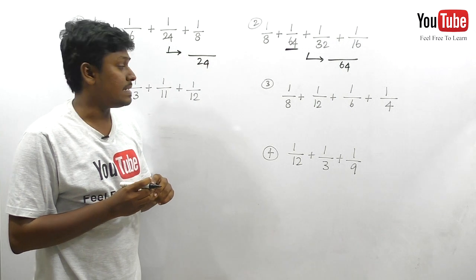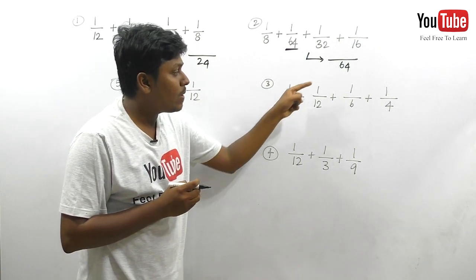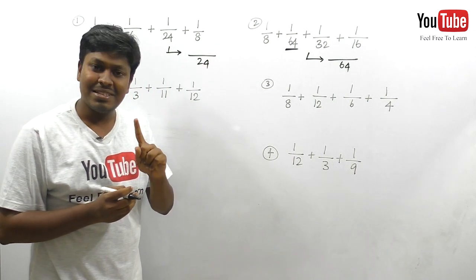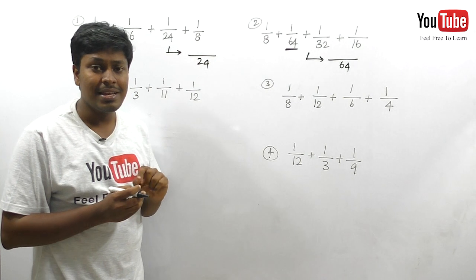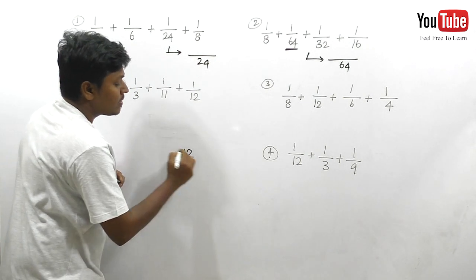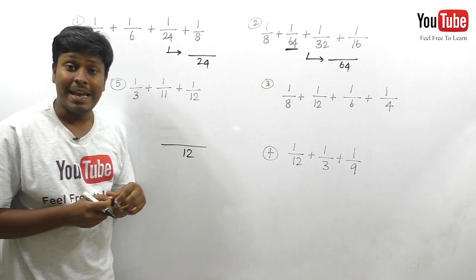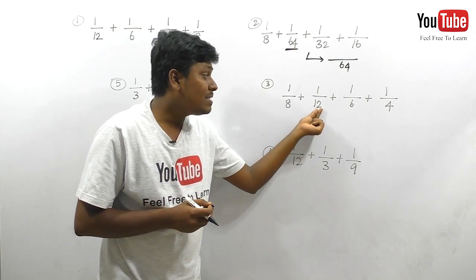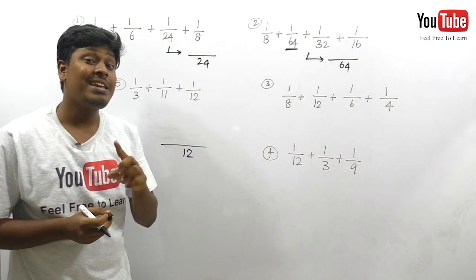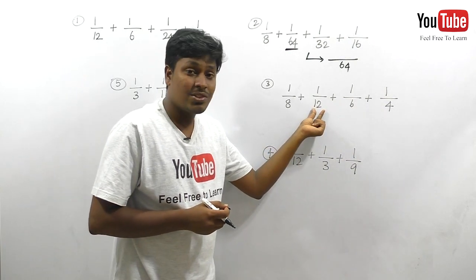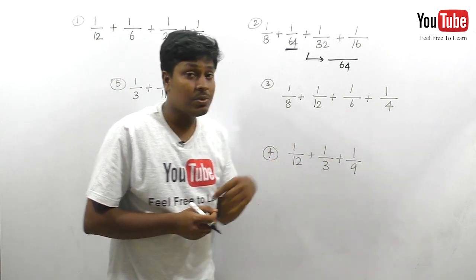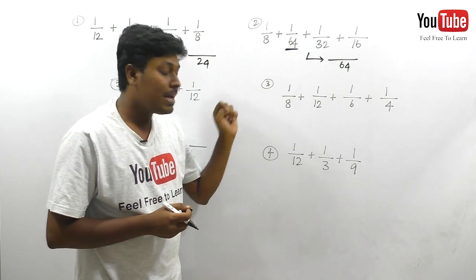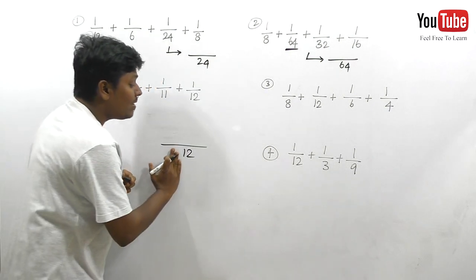Let me move on to the third condition: 1/8 + 1/12 + 1/6 + 1/4. Our first target is to check which number is larger. The number 12 is larger, so I'm going to assume 12 can be an LCM. Next, check whether 12 is divisible by all other remaining numbers: 6 × 2 = 12, 4 × 3 = 12. But 12 is not exactly divisible by 8, so we can't say 12 will be the LCM.